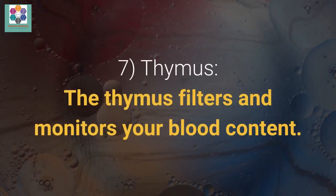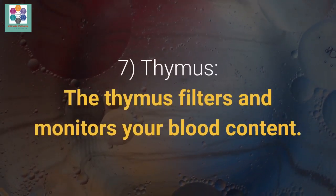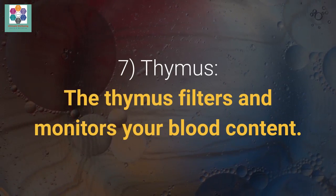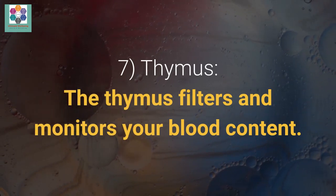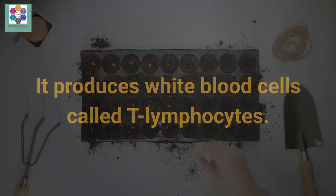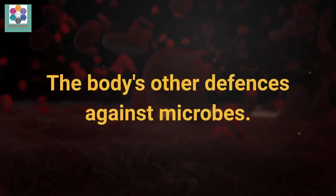7. Thymus. The thymus filters and monitors your blood content. It produces white blood cells called T lymphocytes.